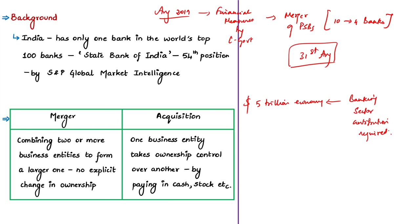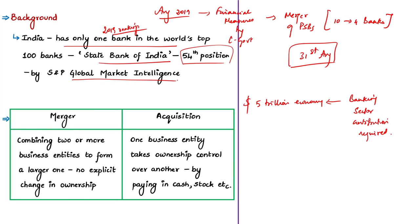In India there are too many banks — public and private sector — but they are minuscule by global standards. India has only one bank in the world's top 100 banks, which is State Bank of India, securing the 54th position in the 2019 ranking given by S&P Global Market Intelligence. SBI got this ranking after the merger of six associate banks with it. A merger simply means combining two or more business entities to form a larger one, without any explicit change in ownership.